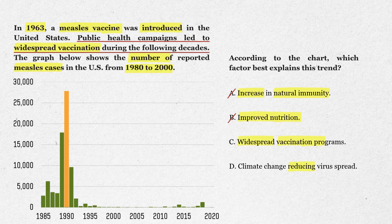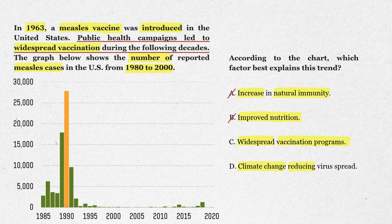Option C: widespread vaccination programs. That matches the background information — the vaccine was introduced, vaccination campaigns spread, and the graph shows the direct result: a steep decline. This one looks good. Option D: climate change reducing virus spread. There's nothing in the data or background that supports this. Cross that one out. So the best answer is option C: widespread vaccination programs.